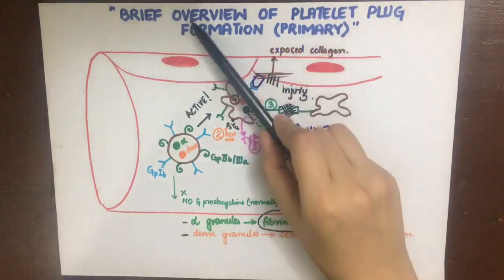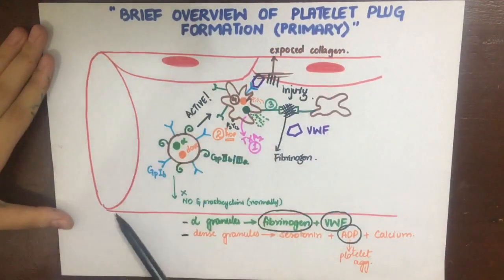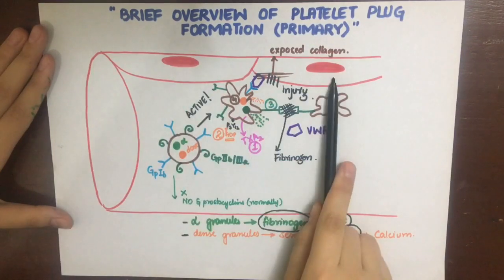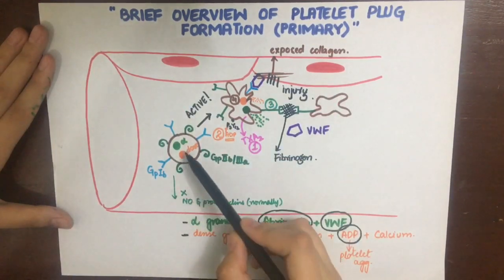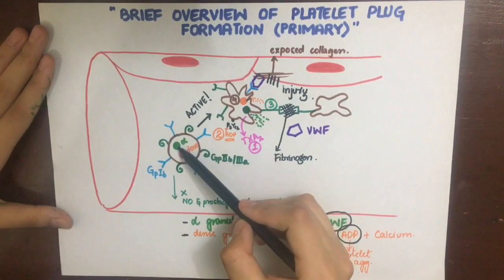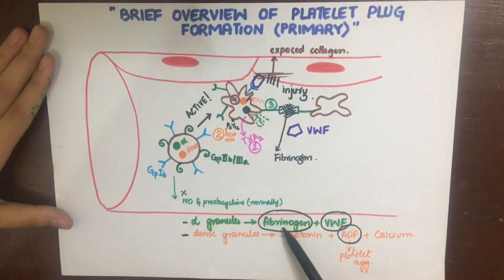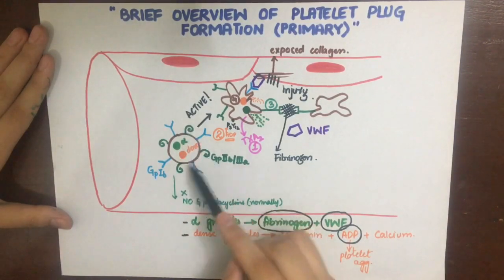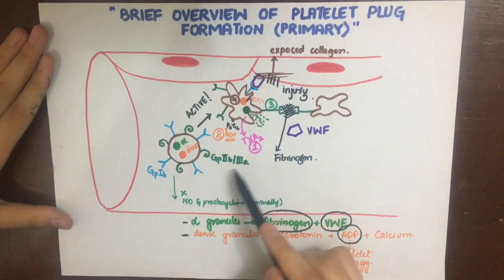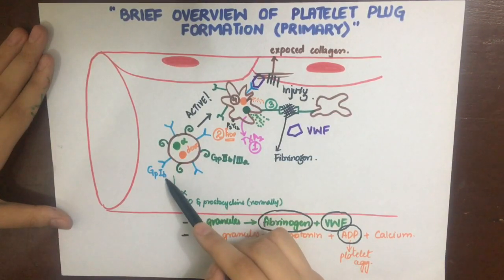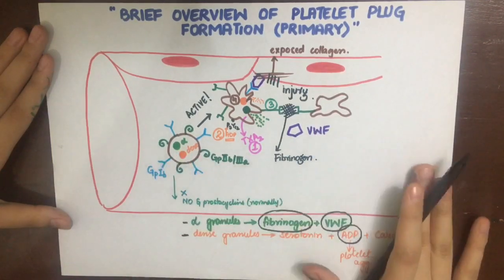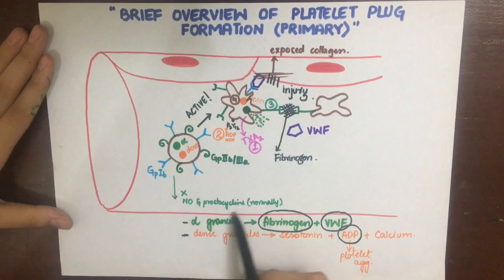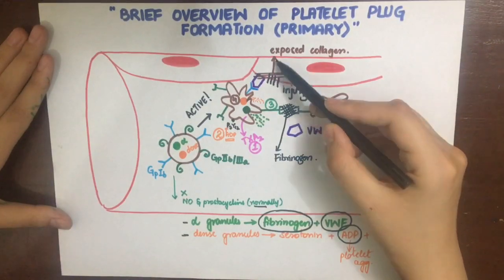This is a brief overview of the primary platelet plug formation. This is a capillary showing two endothelial cells. Normally the platelets have alpha and dense granules. The alpha granules secrete fibrinogen and von Willebrand factor, while the dense granules secrete serotonin, ADP — which helps in platelet aggregation — and calcium. They also have GP2b3a receptors and GP1b receptors, shown in green and blue respectively. Normally, platelets do not interact with endothelial cells because nitric oxide and prostacyclins do not let the platelets aggregate.